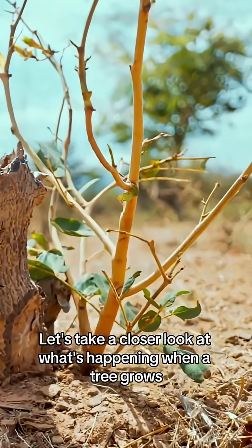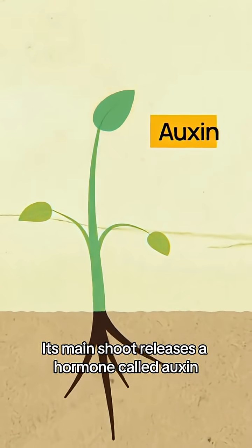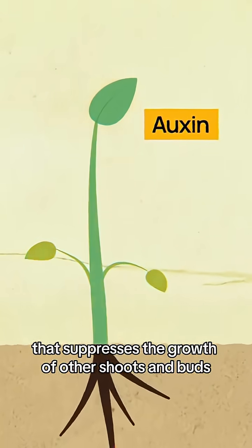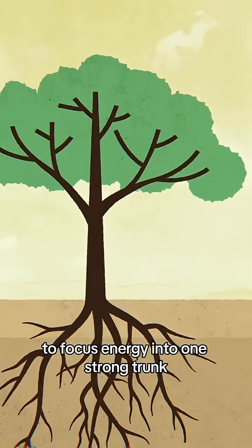Let's take a closer look at what's happening. When a tree grows, its main shoot releases a hormone called auxin that suppresses the growth of other shoots and buds to focus energy into one strong trunk.